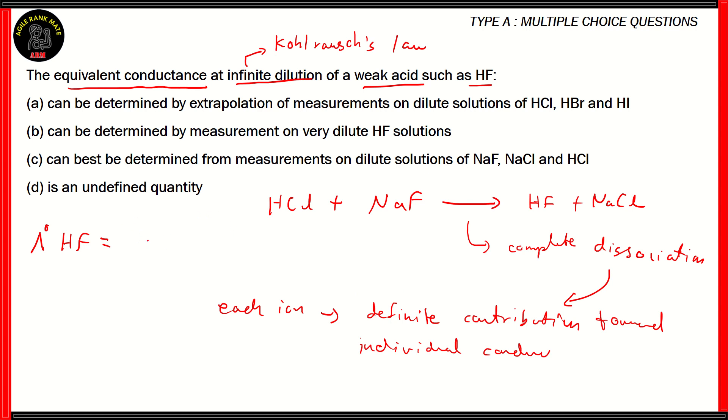So since HF is on the right-hand side, the ones on the left-hand side would have positive charge, so equivalent conductance of NaF plus equivalent conductance of HCl plus, and then you have negative of equivalent conductance of NaCl. That's because it's on the right-hand side. So it's best determined from measurements on dilute solutions of NaF, NaCl, and HCl. So option C, according to Kohlrausch's law, turns out to be the correct way to calculate the equivalent conductance at infinite dilution of a weak acid such as hydrogen fluoride.